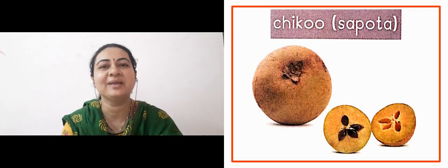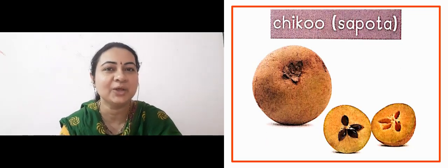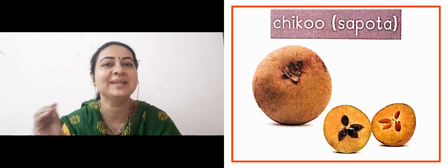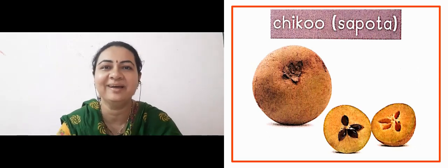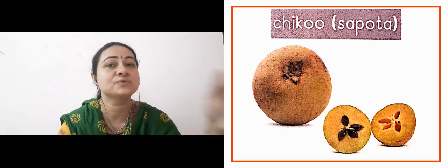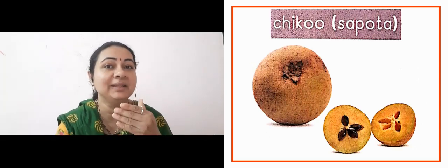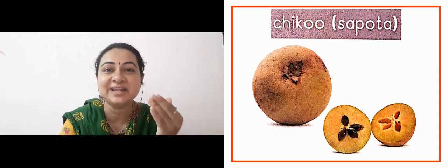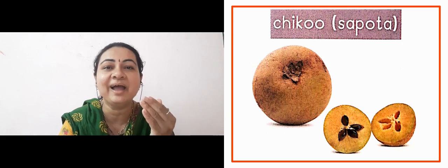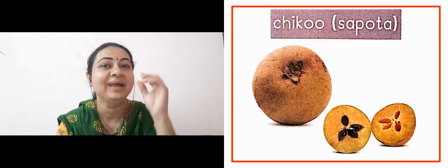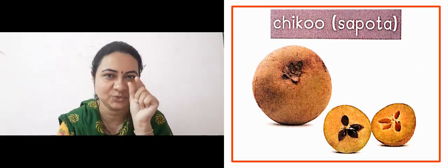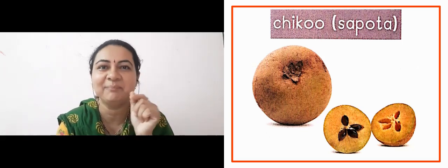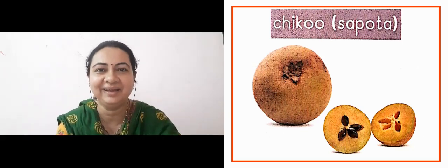The next lady is showing us a chiku. This chiku is of brown color. It is shown cut as well, and its seed is also shown — it is of black color.